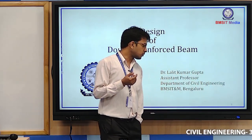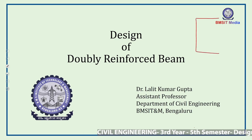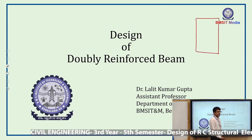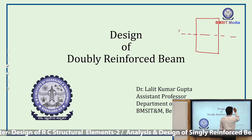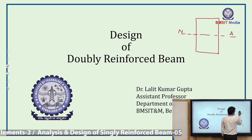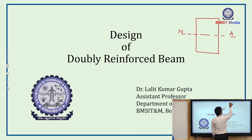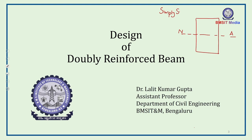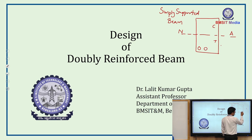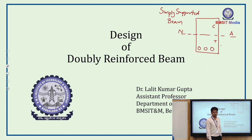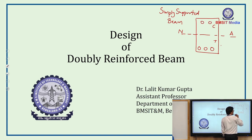Looking at the cross-section of the beam, we have a neutral axis — an imaginary line that divides the section. If we consider this beam as a simply supported beam, the lower zone becomes the tension zone and the upper zone becomes the compression zone. When we provide reinforcement only in the tension zone, that beam is a singly reinforced beam.